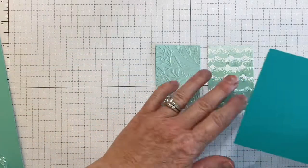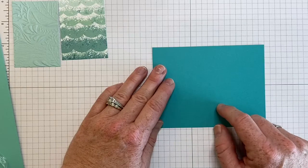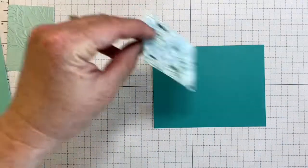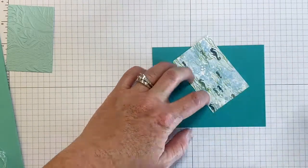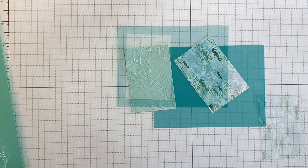You're going to bring in a piece of Bermuda Bay and this is cut at 3 3 quarters by 5. And we're going to go ahead and add the designer series paper to the front as well as the textured cardstock.